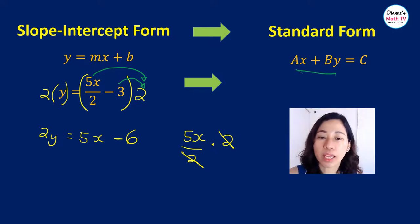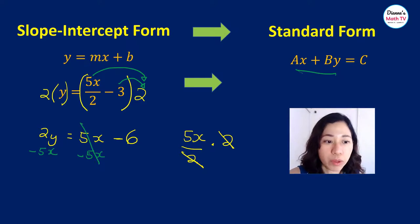And then again, we want it in such a way that the terms involving the variables are together. I want to get rid of the 5x here, so I will subtract 5x from both sides. So this becomes 0. I will now have negative 5x plus 2y.